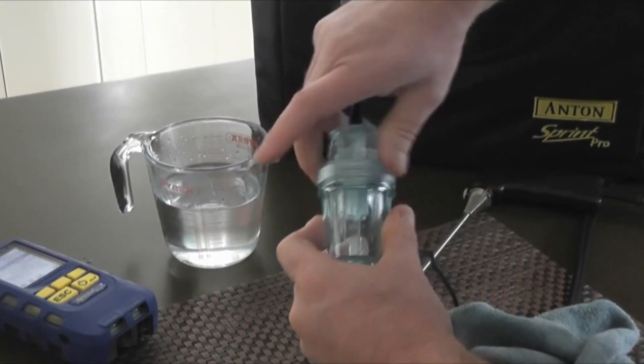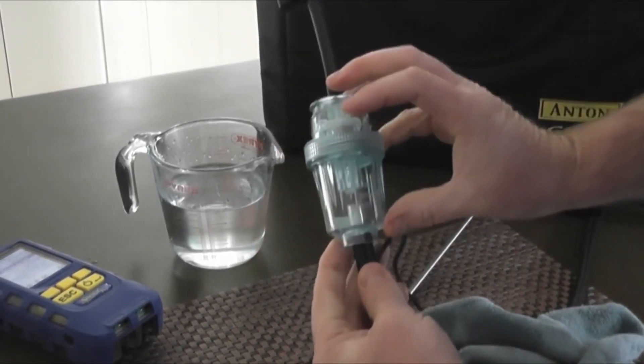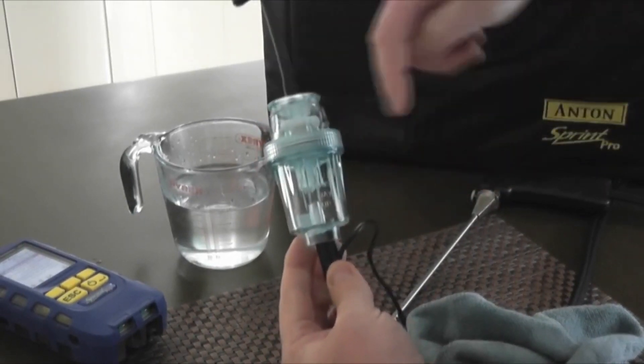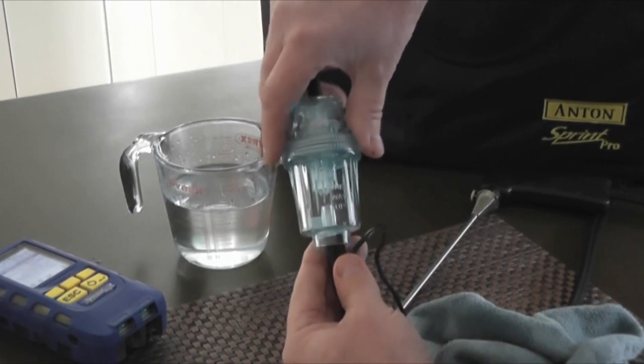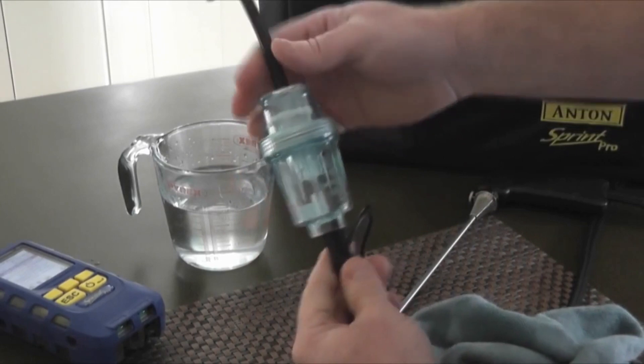And you'll notice the whole design of the filter bowl has been reconsidered. So we've made this out of the same materials that are used for crash helmets. So it's very robust and the central nut is designed so it acts as a bumper if the filter bowl is dropped. So we expect this to last a great deal longer.